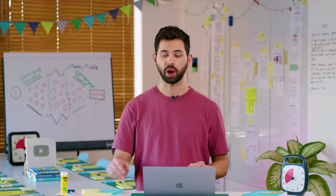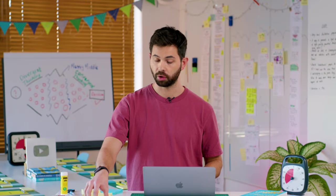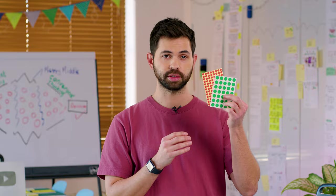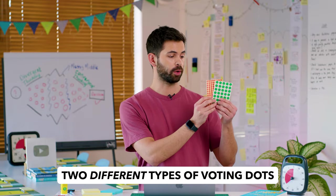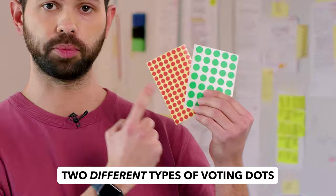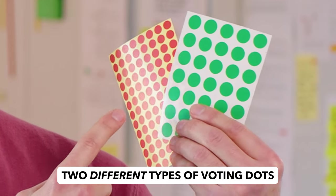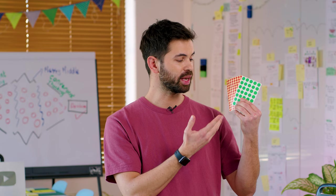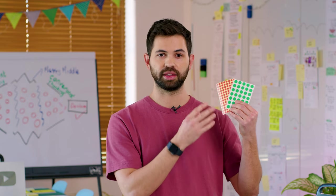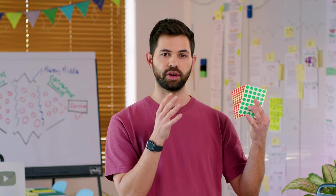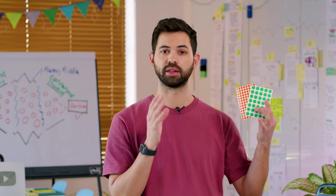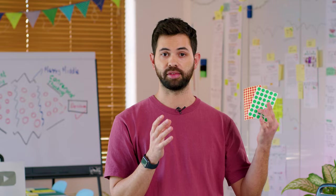For voting, we recommend getting some voting dots just like these. At AJN Smart, we like using the small red dots and the bigger green dots. The main idea is that the colors are very different and also the shapes, so you can tell them apart easily.